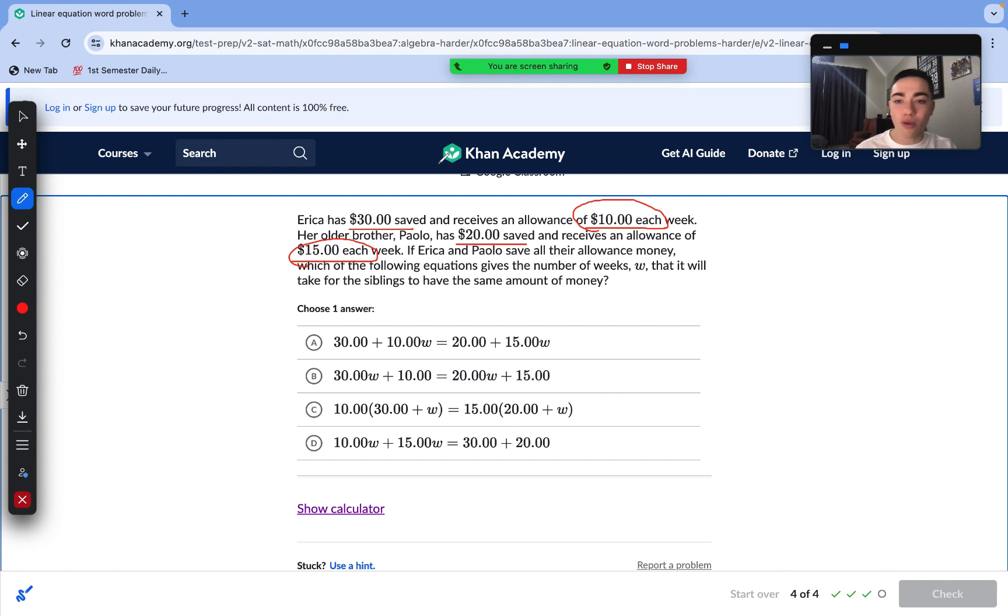This is something that we'll see a lot when we go to systems of equations. But, this is rather an easy question. We just need to set up two different equations for Erica. So, one for Erica, one for Paolo. And then, set them equal to each other to find our answer. So, let's first do Erica's one.